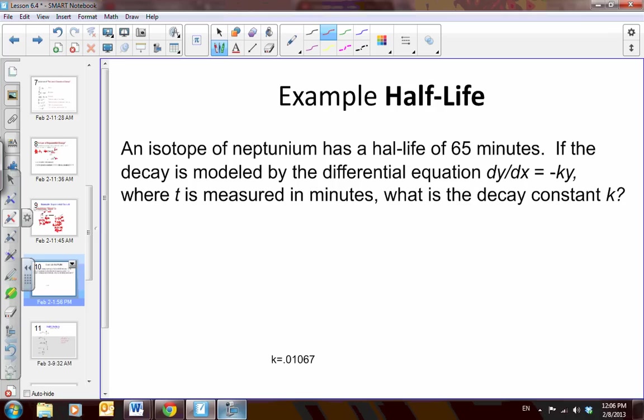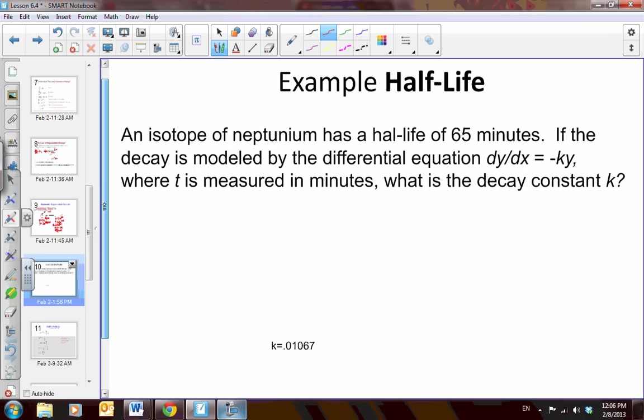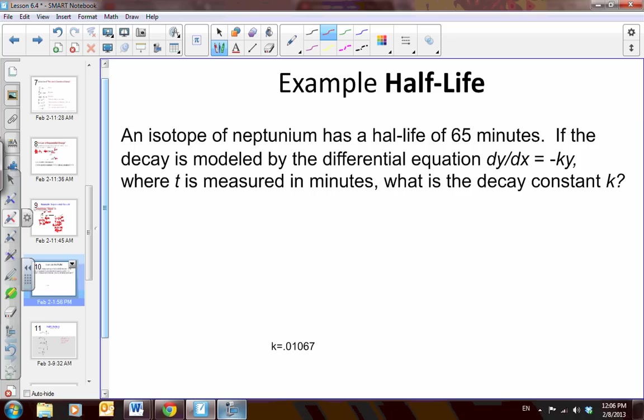Now, here's another example. This is half-life. Now, I know that you've done half-life in algebra 2, but you may not have understood where that half-life formula came from. So, for half-life, we are given some facts. We have 65 minutes in half-life. And if the k is modeled by the differential equation dy over dt equals negative k times y.